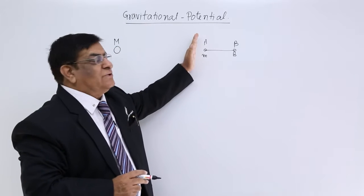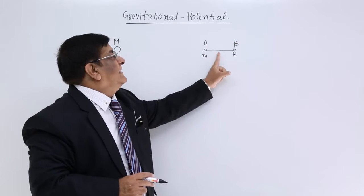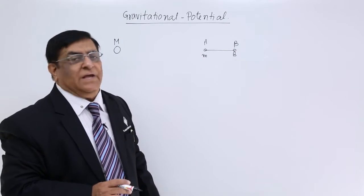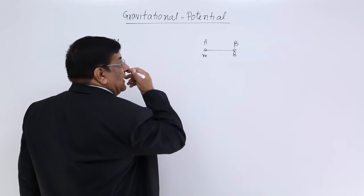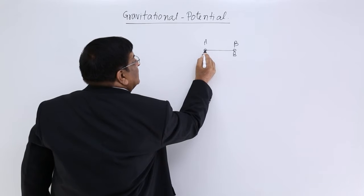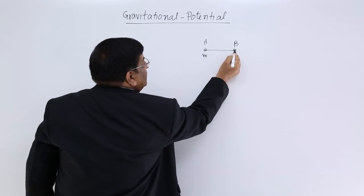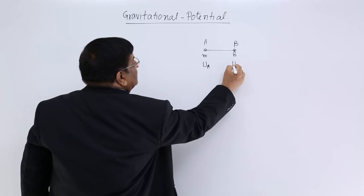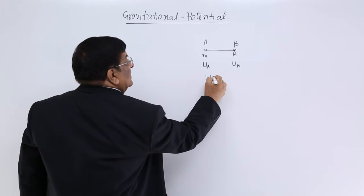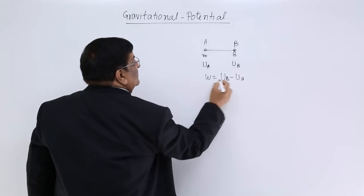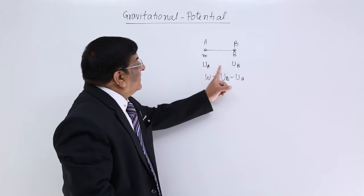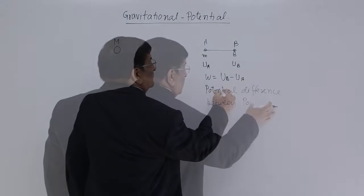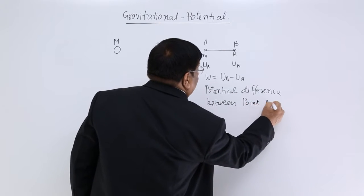So I have to apply an equal and opposite force and keep sliding it up to B — there is a displacement. I have applied a force and done a displacement, so I have done a certain amount of work. If I am doing work, where does my energy go? The energy is stored in this particle. There are two energy levels of this mass: here its energy is U at A, and here its energy is U at B. The work-energy theorem says I have done work equal to UB minus UA. This difference in potential energy — the work done — is known as the potential difference between points A and B.